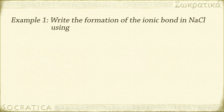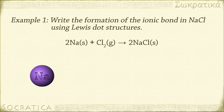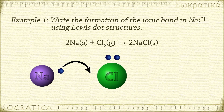You can write the formation of an ionic bond using Lewis dot structures. In the reaction 2Na + Cl2 → 2NaCl, for every formula unit of NaCl, one sodium atom loses an electron and one chlorine atom gains an electron. We can write the reaction like this: an atom of sodium, which has one valence electron, gives that electron to an atom of chlorine, which has seven valence electrons.